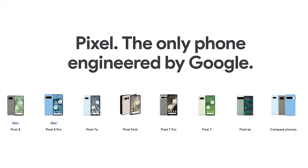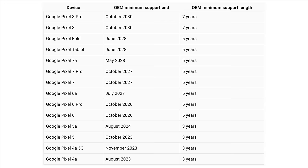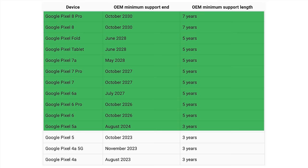So if you decide to install GrapheneOS, which Pixel device should you choose? Probably the latest model within your budget constraints. Right now the latest model is the Pixel 8. This will give you the longest support for security updates, which is important because you don't want to keep using hardware that's no longer getting security updates.